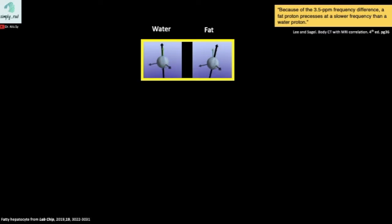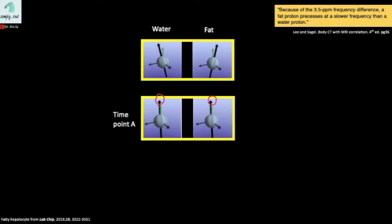Keeping things in simple terms, if we take a picture of these protons at time point A, where both water and fat are in phase with each other, we create an image where the signal of both water and fat are additive.